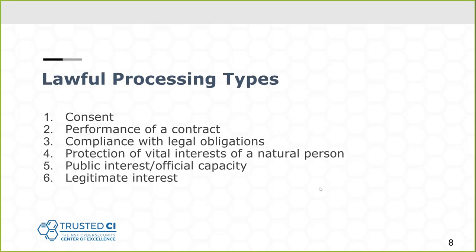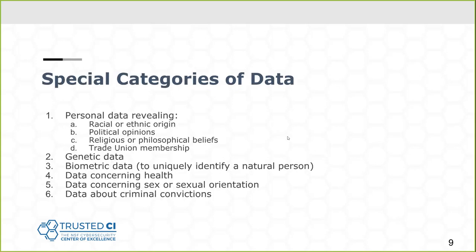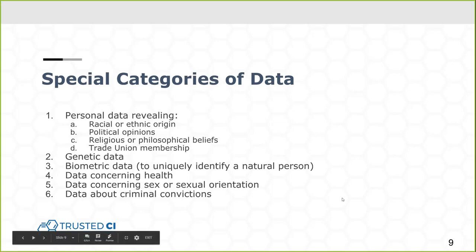There are special rules for special types of data. If we're dealing with personal data that reveals racial or ethnic origin, political opinions, trade union membership, religious or philosophical beliefs, and other privacy-sensitive categories, the lawful processing types still basically apply, but they're stricter. It's harder to get consent on one of these things, and you may have to specify very precisely what you're doing the processing for. The rules are just a little bit tighter when dealing with special categories of data. The main takeaway is that you need to be able to point to a good reason why you're doing data processing — it's no longer good enough just to do it, which is kind of the U.S. approach.